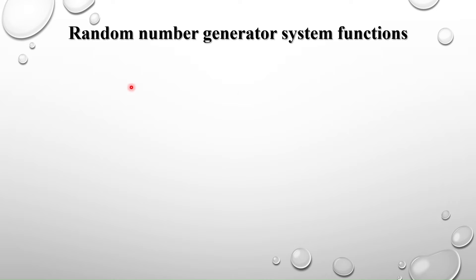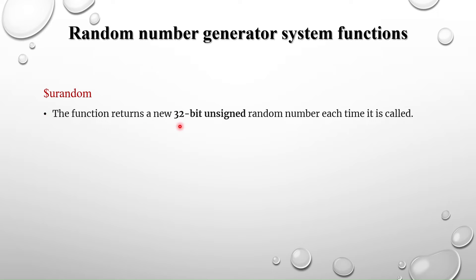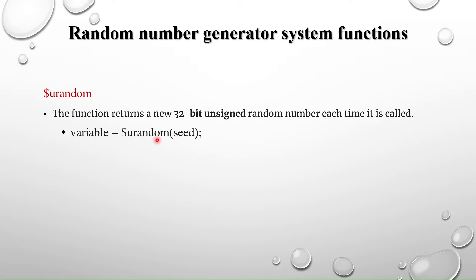Now we will look at the random number generator system functions. In Verilog, we have the system task $random. Similarly, in SystemVerilog we have the system functions $urandom and $urandom_range. The 'u' means unsigned. The $urandom function returns a new 32-bit unsigned random number each time it is called, generating a pseudo-random value. It also accepts an optional seed argument.